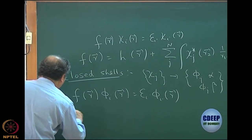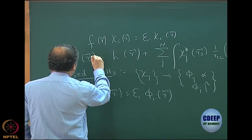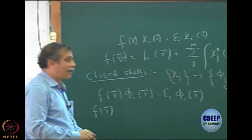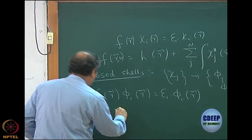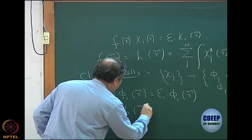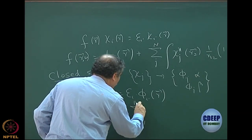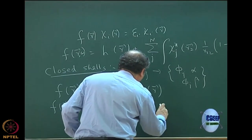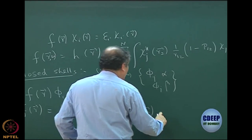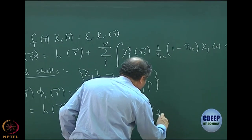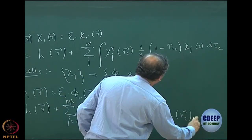This f of r, which is now the space orbital operator — actually I should correct it: f is not f of r, it is f of r-omega, because you have spin orbitals. So the full operator is f(r,omega), while this particular one is just f(r). That is: f(r) = h(r) plus sum over j from 1 to n/2 of phi_j*(r2) times (1/r12) times (2 minus P12) times phi_j(r2) d-tau.